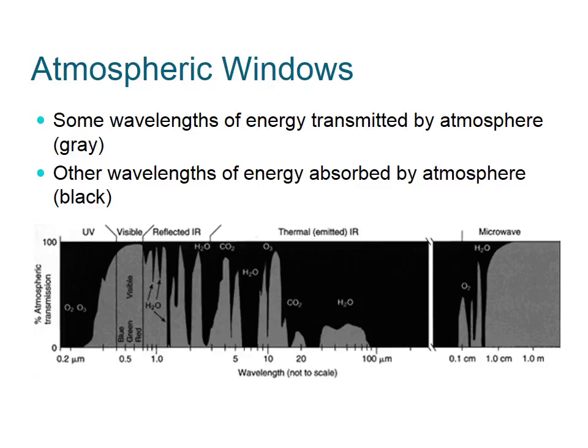Not all parts of the electromagnetic spectrum are transmitted by the atmosphere to the surface of the Earth. Those portions that are transmitted are known as atmospheric windows, shown in gray on the chart. We can see that the visible region, infrared region, and the radio region are all transmitted by the atmosphere. Other wavelengths of energy are absorbed by the atmosphere, shown in black on the diagram. These include the ultraviolet region, portions of the infrared region, as well as portions of the microwave region. Various gases within the atmosphere absorb these wavelengths of energy and prevent their transmission to the surface of the Earth.